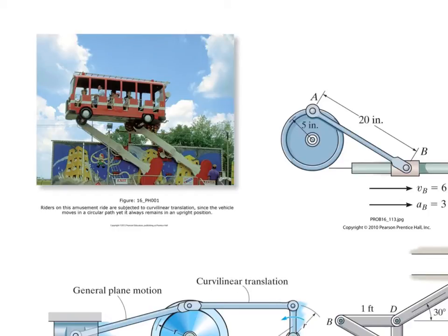I wanted to visit with you briefly about parallel velocity vectors. When we see parallel velocity vectors, we know that the omega of the particular link is zero, and that means the velocity vectors on each side of that link are equal to zero.